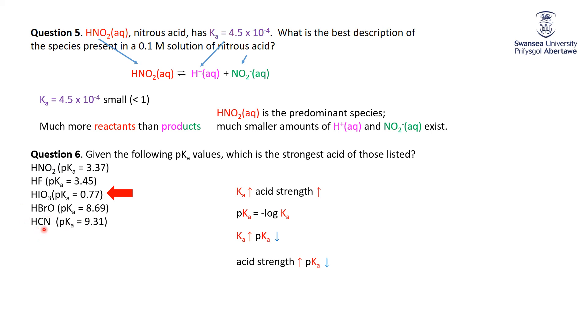And then the weakest acid here is HCN, because the pKa is the biggest, which means the Ka is the smallest. Okay. Remember, as soon as you stick a p in front of something, it flips the trends, it flips the relationships. We'll see that several times as we're going through all of these questions.